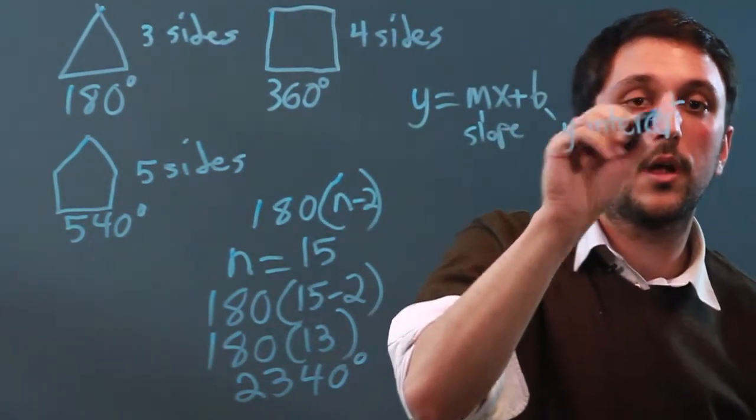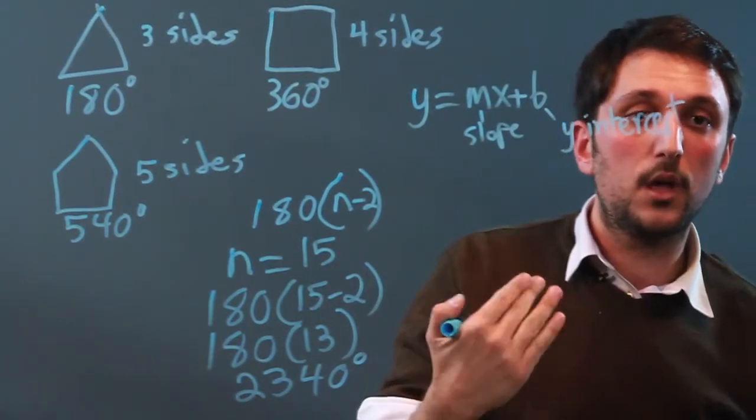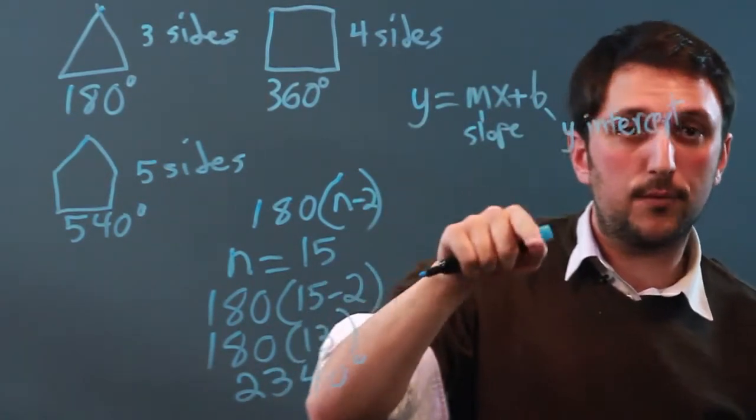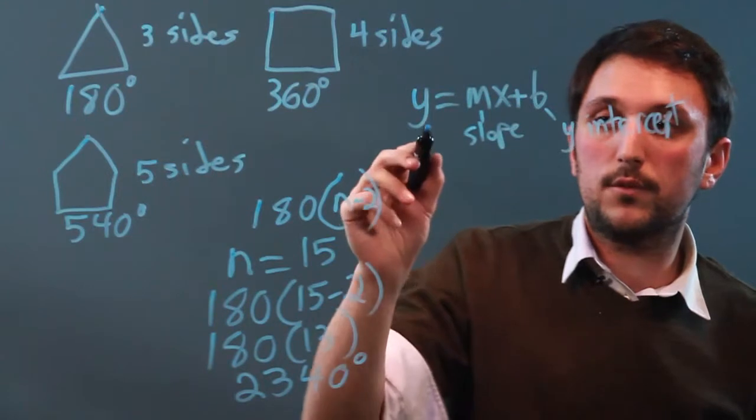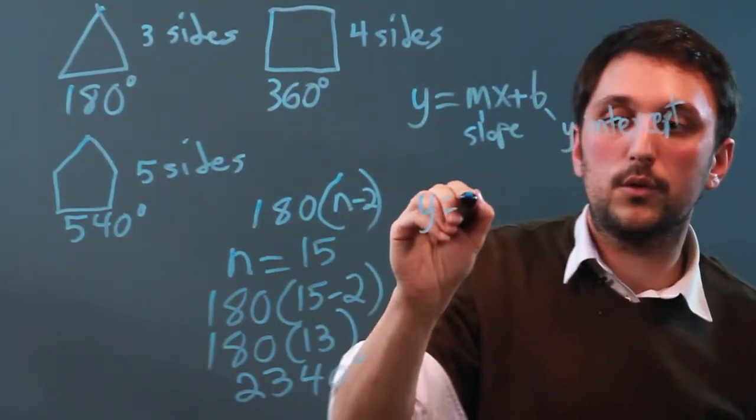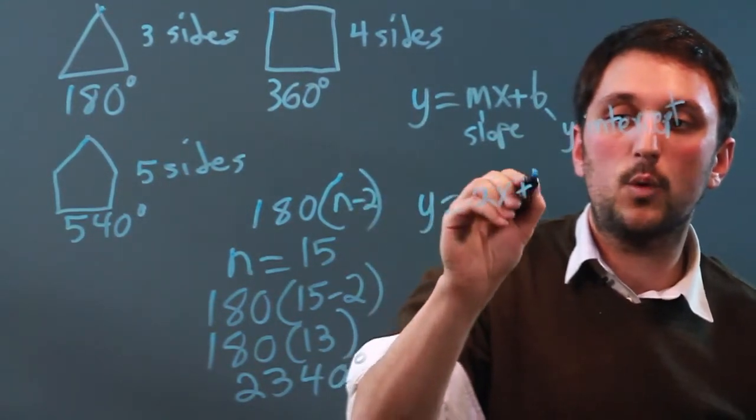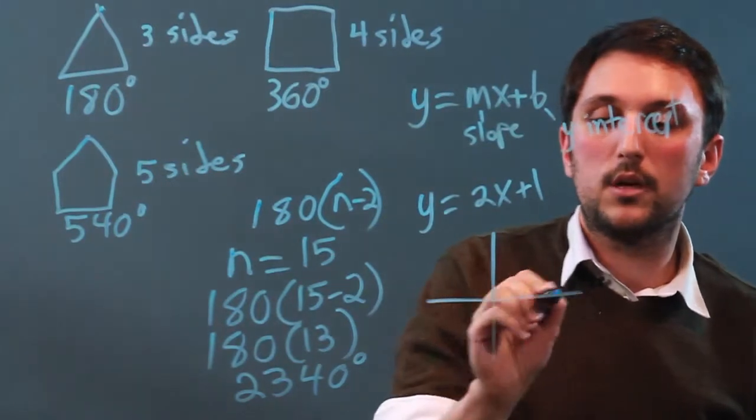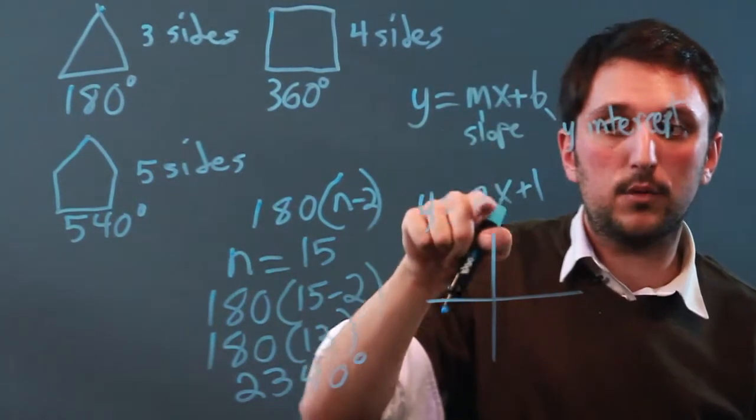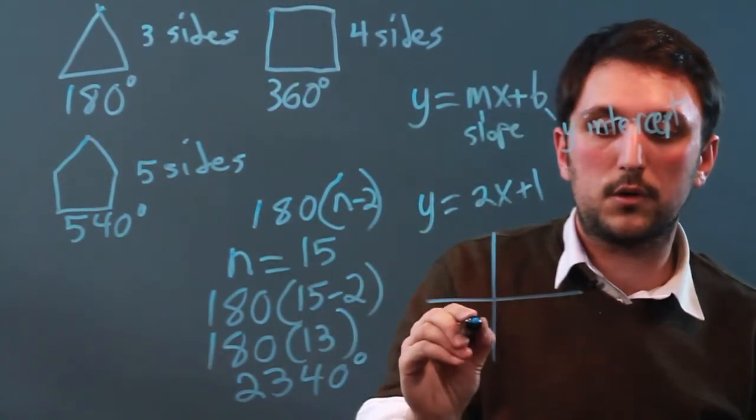Rather than trying to draw a whole graph and pick out every point, if you know that you have y equals 2x plus 1, then on a graph you know that the m value is the slope, so that's 2, so it's going to be kind of going up.